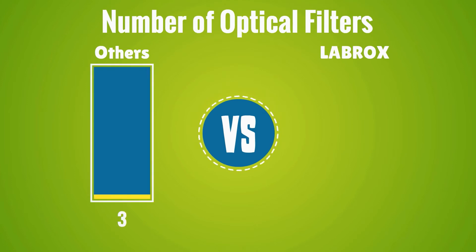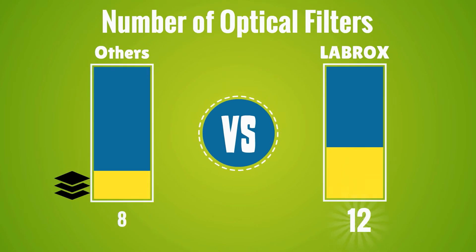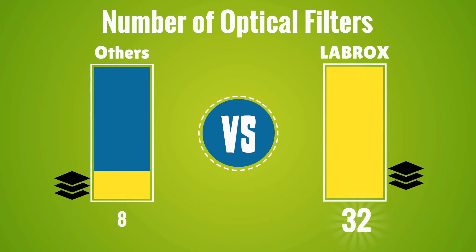While other devices on the market usually store from 4 to 8 filters, Labrox storage system can hold up to 32 optical filters.